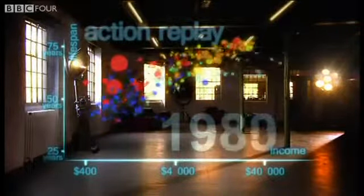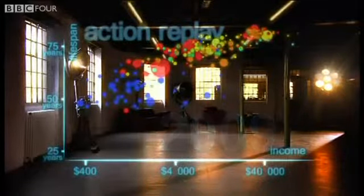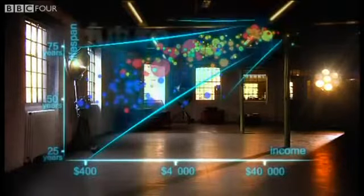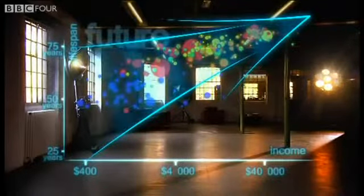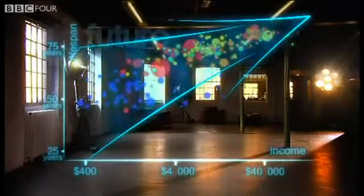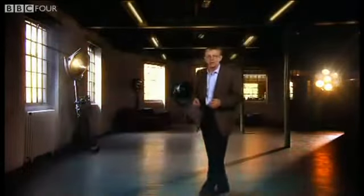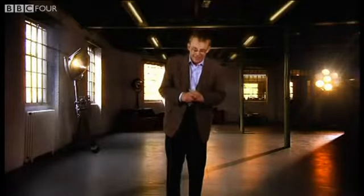That huge historical gap between the West and the rest is now closing — we have become an entirely new converging world. I see a clear trend into the future: with aid, trade, green technology, and peace, it's fully possible that everyone can make it to the healthy wealthy corner. What you have seen in the last few minutes is a story of 200 countries shown over 200 years, involving the plotting of 120,000 numbers — pretty neat.